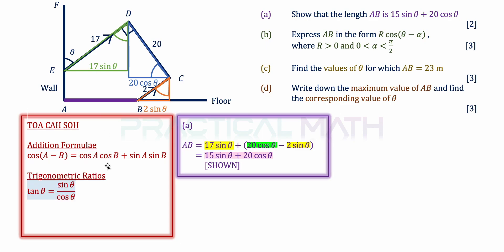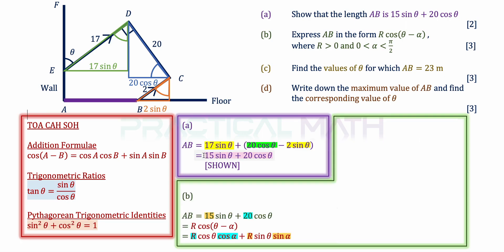In step 1, AB equals 15 sin theta plus 20 cos theta. We equate this to R cos(theta minus alpha). Expanding using the addition formula, R cos(theta minus alpha) becomes R cos theta cos alpha plus R sin theta sin alpha.